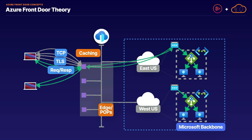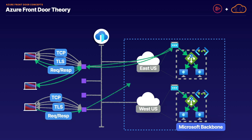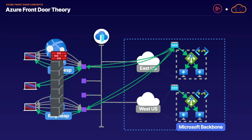These points of presence now have some content cached to service future requests more quickly. If a user requests traffic from a different edge location, the process starts over — they establish TCP and TLS, make a request, it's forwarded to the back end web solution, and the return traffic caches that content there. Additionally, we can have a web application firewall to protect our edge locations and provide custom or managed rule sets for web applications behind our Azure Front Door.